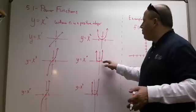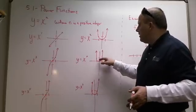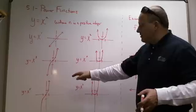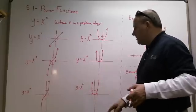Y equals x to the 4th, now you can plug some points in, but it looks like this. Y equals x to the 5th, and y equals x to the 6th.